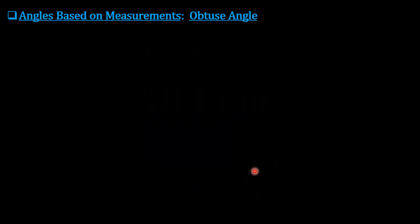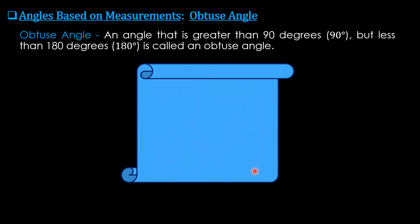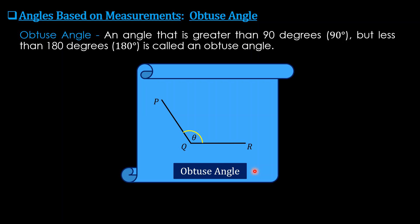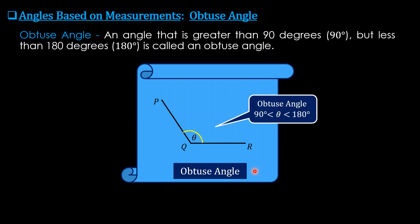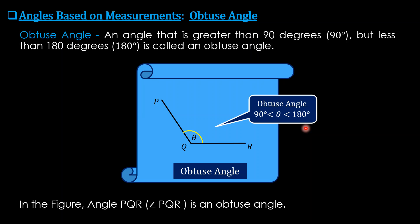An obtuse angle is an angle that is greater than 90 degrees but less than 180 degrees. In this figure, angle PQR, also called angle theta, is greater than 90 degrees but less than 180 degrees — theta is lying between 90 and 180 degrees. So angle PQR is an obtuse angle.